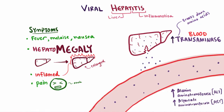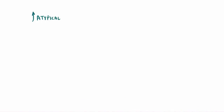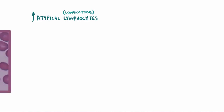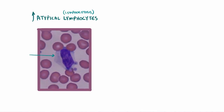Typically, even though both are elevated, ALT will be greater than AST in viral hepatitis, and it'll also be the last liver enzyme to return to normal. Additionally, elevated levels of atypical lymphocytes are common to see with viral hepatitis, known as atypical lymphocytosis. The lymphocytes are usually very large due to stimulation from antigens — in this case, the hepatitis virus antigens.